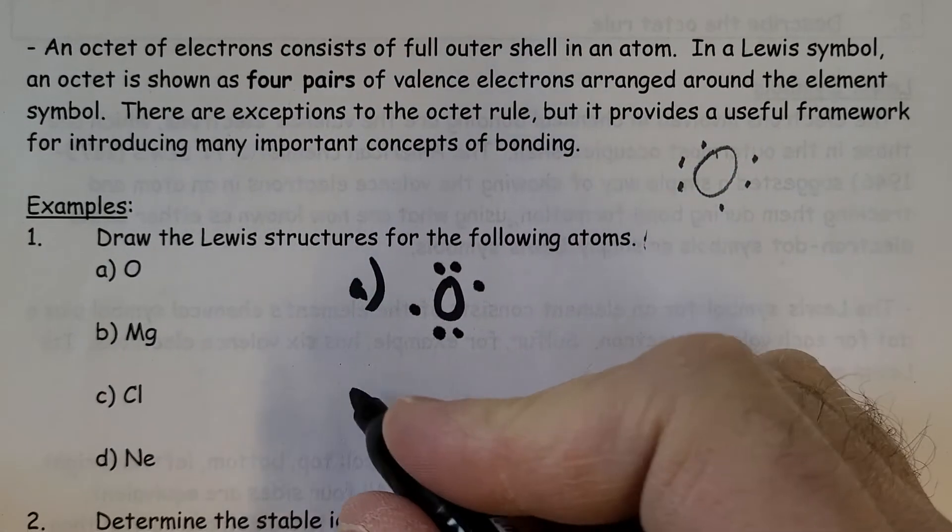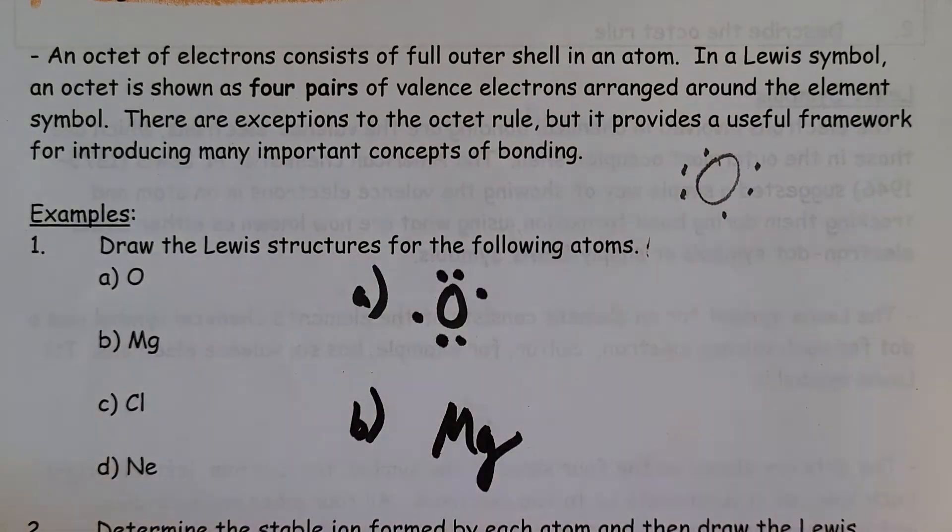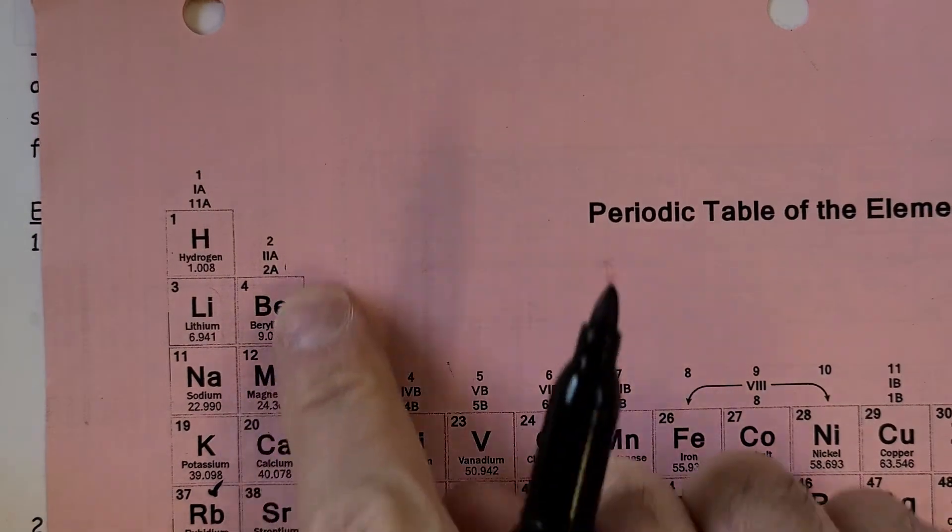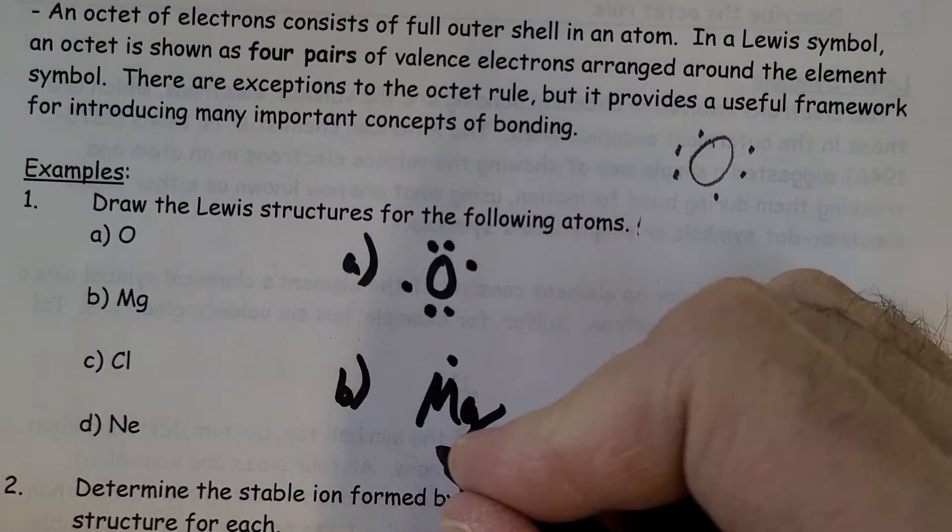Magnesium: I've looked at magnesium, it's over here, Group 2A, so it has two valence electrons. I could go top and bottom or left and right, it doesn't matter.